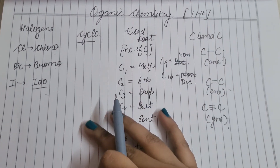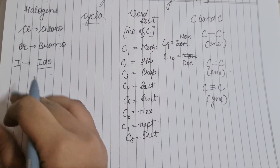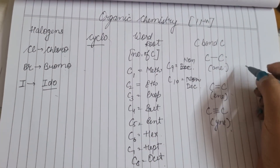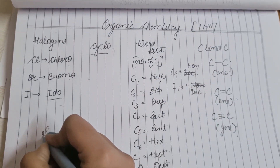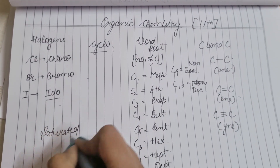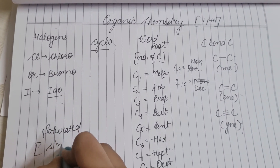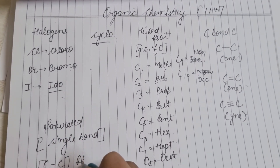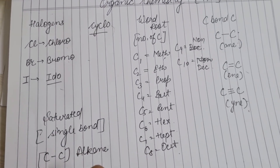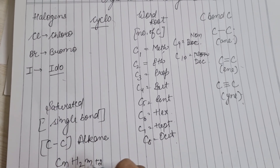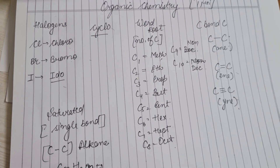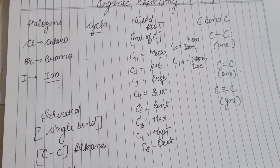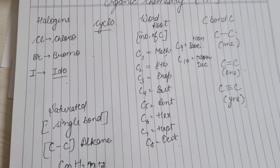कुछ common चीज़ें और examples देखते हैं। जो compounds होते हैं, वो दो तरह के होते हैं: एक saturated और एक unsaturated। Saturated के अंदर single bond वाले आते हैं। यानि कि जिन carbon के बीच में single bond होगा, वो alkane होते हैं। Alkane का formula होता है CnH(2n+2), जहाँ n number of carbons है।